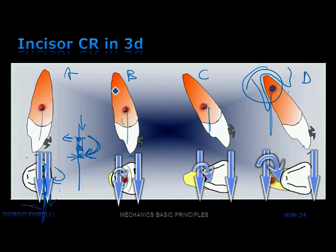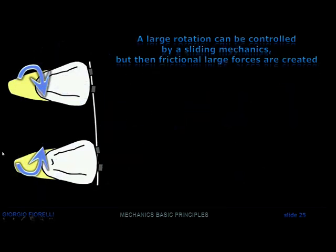And there is a certain point that you really can't move the tooth because the friction you create is too much. So there are two possibilities: either you don't place a wire and you get a lot of rotation, or you place a wire which has a lot of play.